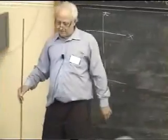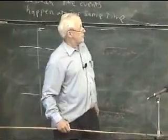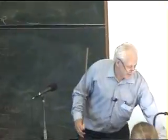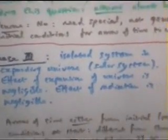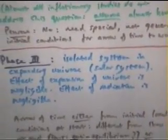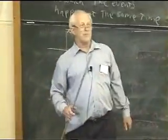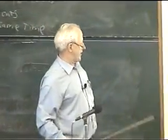Almost all inflationary universe studies do not address the question of inhomogeneity, because virtually 95% of the papers on inflation assume the universe is spatially homogeneous to start with. There are very few papers looking at inhomogeneity and inflation. What Penrose says is inflation does not solve the arrow of time problem — you need special, not generic, initial conditions. His point is that if the whole universe were made up of huge amounts of black holes, that would have much more entropy than what we actually see, which would be a much higher entropy initial state.